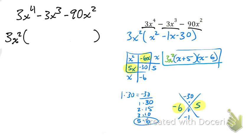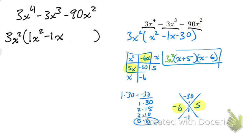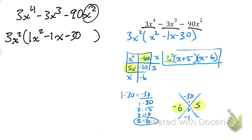When I do that, I rewrite my polynomial. So: 3 divided by 3 is 1, and x to the fourth divided by x squared is x squared. Then negative 3 divided by positive 3 is negative 1, and x to the third divided by x squared is x. Then negative 90 divided by 3 is negative 30, and x squared divided by x squared equals 1 — but we don't need to write times 1.